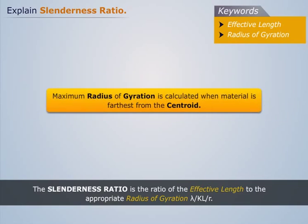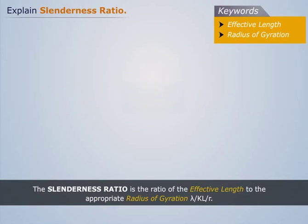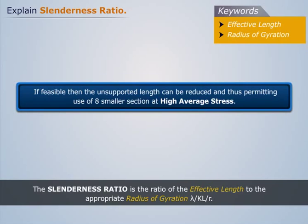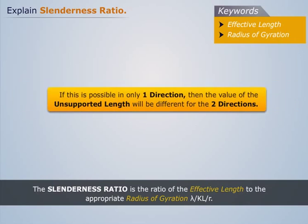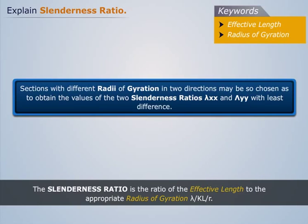Maximum radius of gyration is achieved when material is farthest from the center. If feasible, the unsupported length can be reduced, permitting use of a smaller section at high average stress. If this is possible in only one direction, then the value of the unsupported length will be different for the two directions.